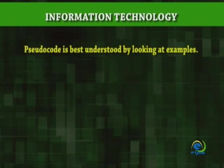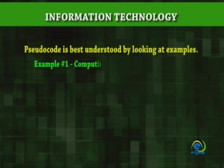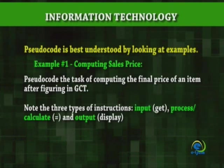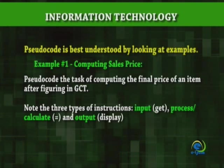Pseudocode is best understood by looking at examples. Example number 1: Computing sales price. Pseudocode the task of computing the final price of an item after figuring in GCT. Note the three types of instructions: input (get), process/calculate (equal), and output (display).